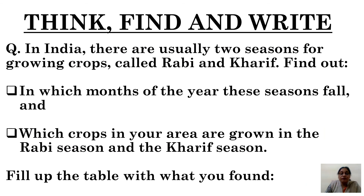The next question is: you have to think, find, and write. In India there are usually two seasons for growing crops called Rabi and Kharif. Find out in which months of the year these seasons fall, and which crops in your area are grown in the Rabi season and in the Kharif season. You have to fill a table with what you found.